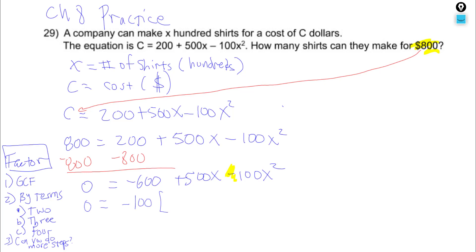And divide negative 100 from all three terms. So, negative 600 divided by negative 100 is 6. 500X divided by negative 100 is minus 5X. And negative 100 divided by negative 100 is 1X squared. And it's positive. I'm going to put it in order, so that the leader is positive. The X squared is positive, which is going to make it much easier to factor.